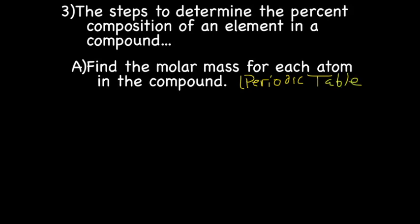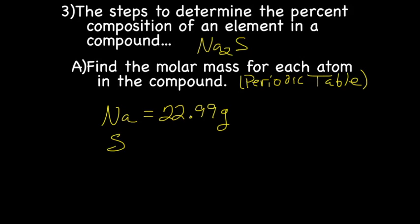Okay, I guess we need a practice problem. So we will figure out the percent composition of Na2S. Step one says find the molar mass for each atom in the compound. So we have Na, and on the periodic table it is 22.99 grams, and we have S, and it is 32.07 grams.